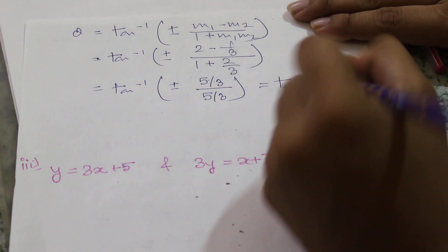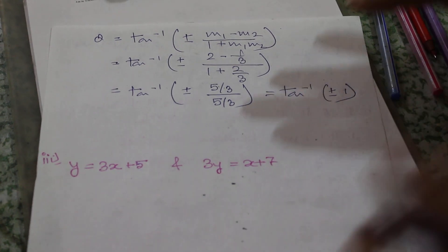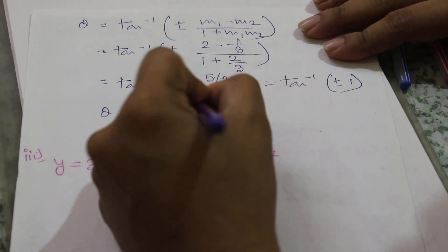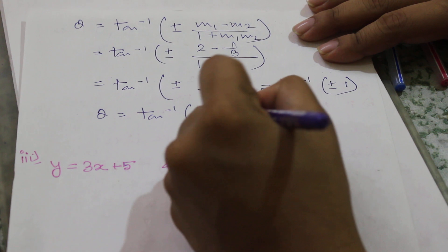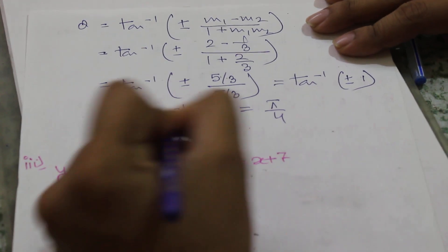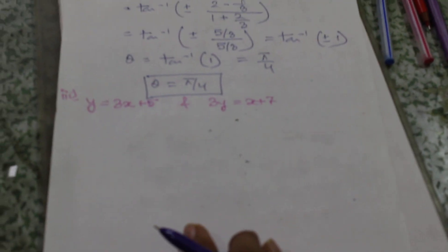If we consider only the acute angle here, then θ = tan⁻¹(1) = π/4. So the angle between the two straight lines is π/4.